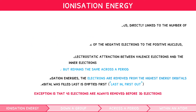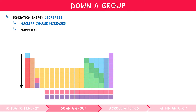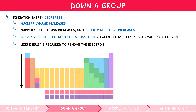Now let's look at how ionization energy changes down a group. As you go down a group, the ionization energy decreases. This is because nuclear charge increases; however, the number of electrons also increases, so the shielding effect increases. This shielding has a greater impact than the increase seen in nuclear charge. Therefore, there is a decrease in the electrostatic attraction between the nucleus and its valence electrons, meaning less energy is required to remove the electron.